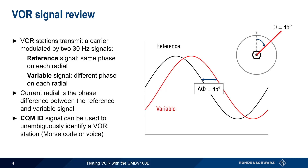The COMID signal component isn't used for determining the current radial, but rather contains a Morse code or voice signal that can be used to unambiguously identify the VOR station.